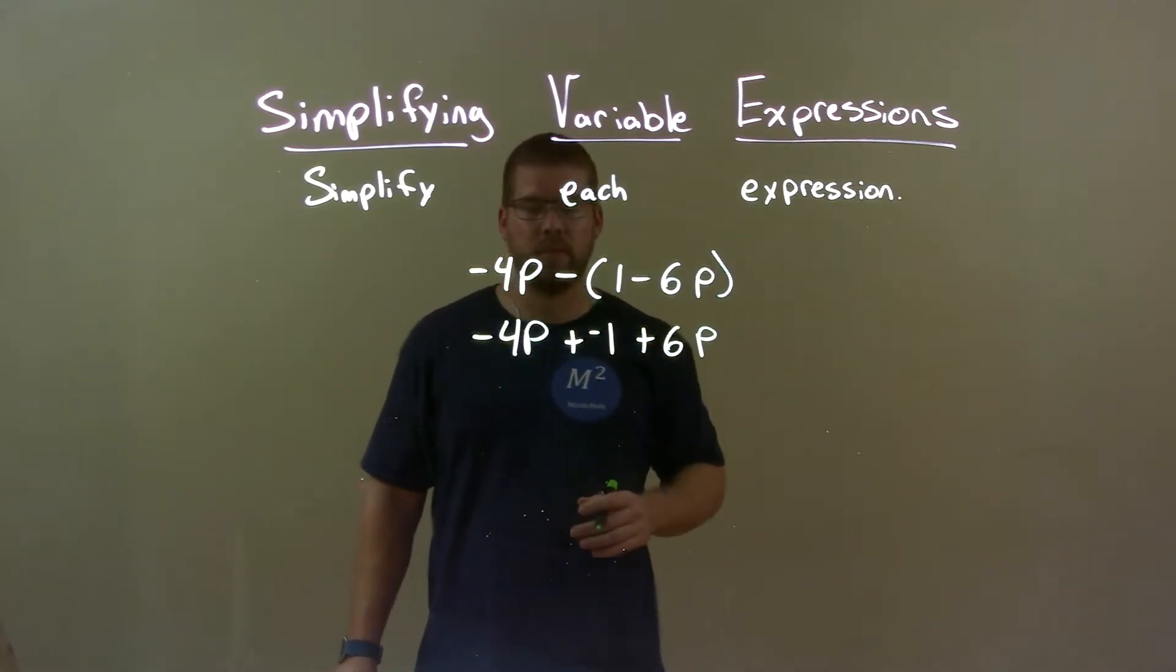And so, now we have negative 4p plus a negative 1 plus 6p. Well, now we've combined our like terms. Hopefully, we can see just the letter p's are like terms that we can see here. So, negative 4p plus 6p is a 2p. Adding a negative is the same thing as subtraction. So, we have minus 1. And so, my final answer here is 2p minus 1.